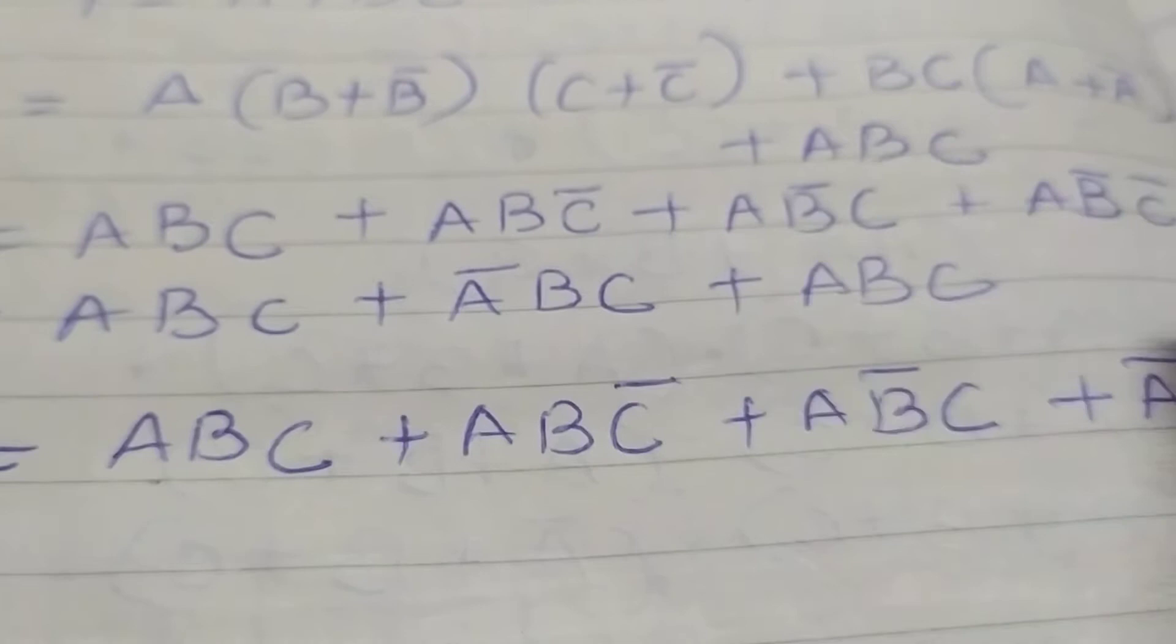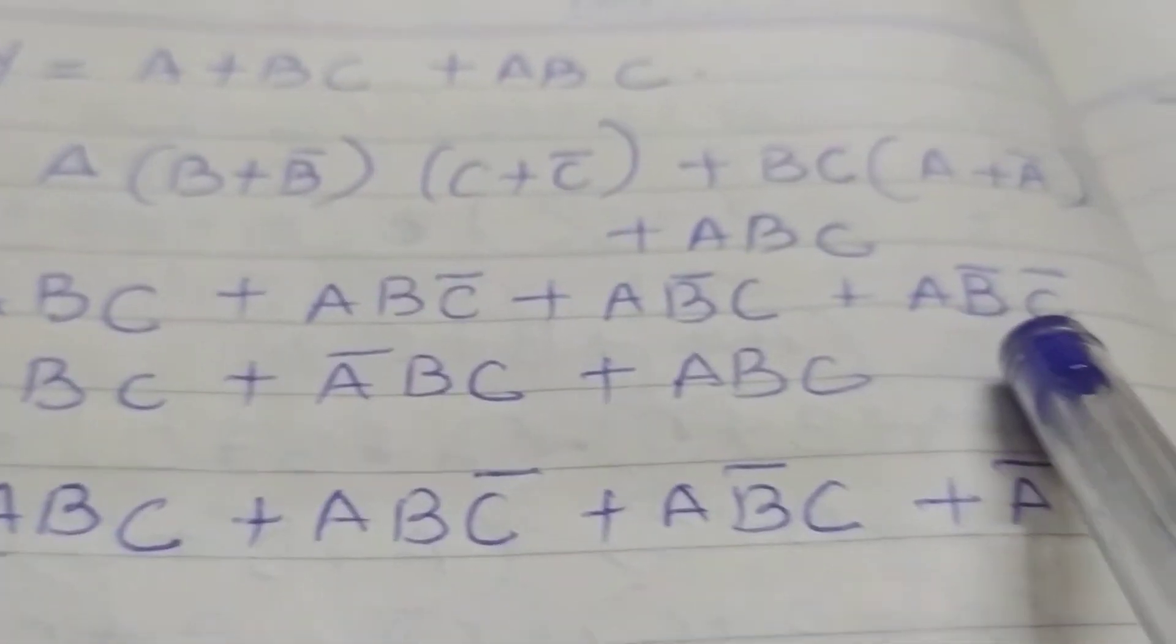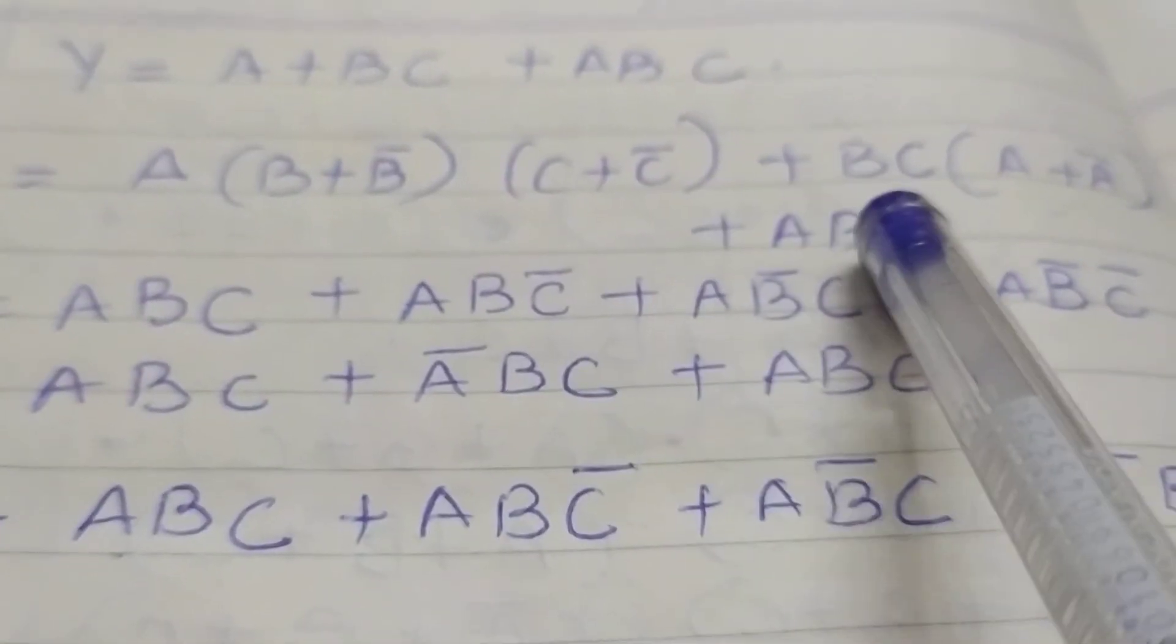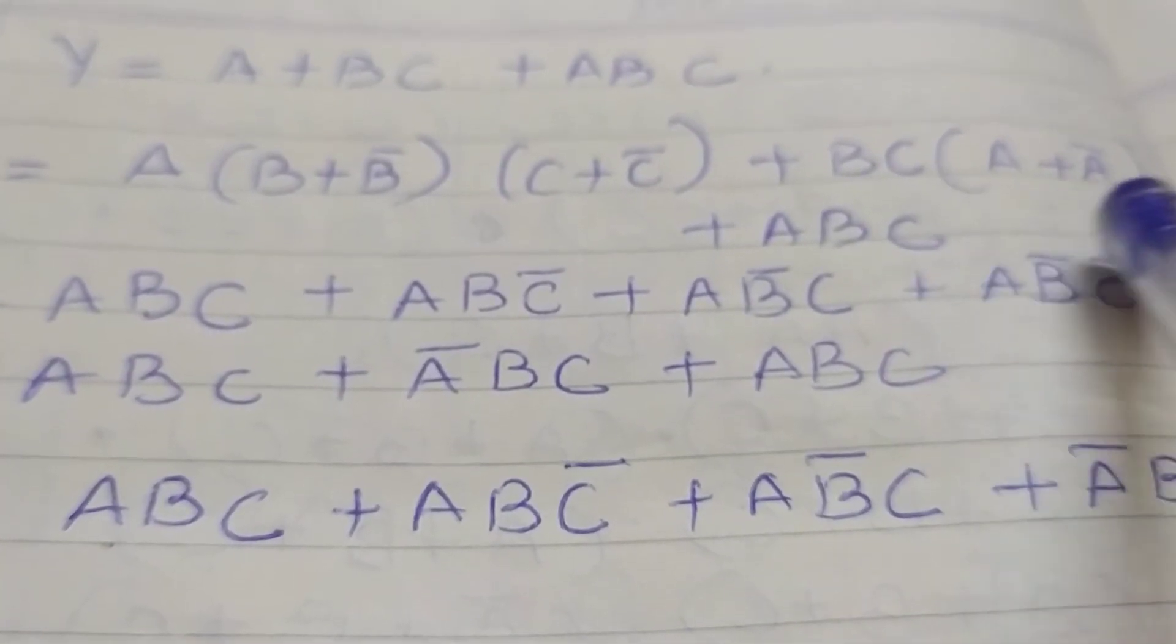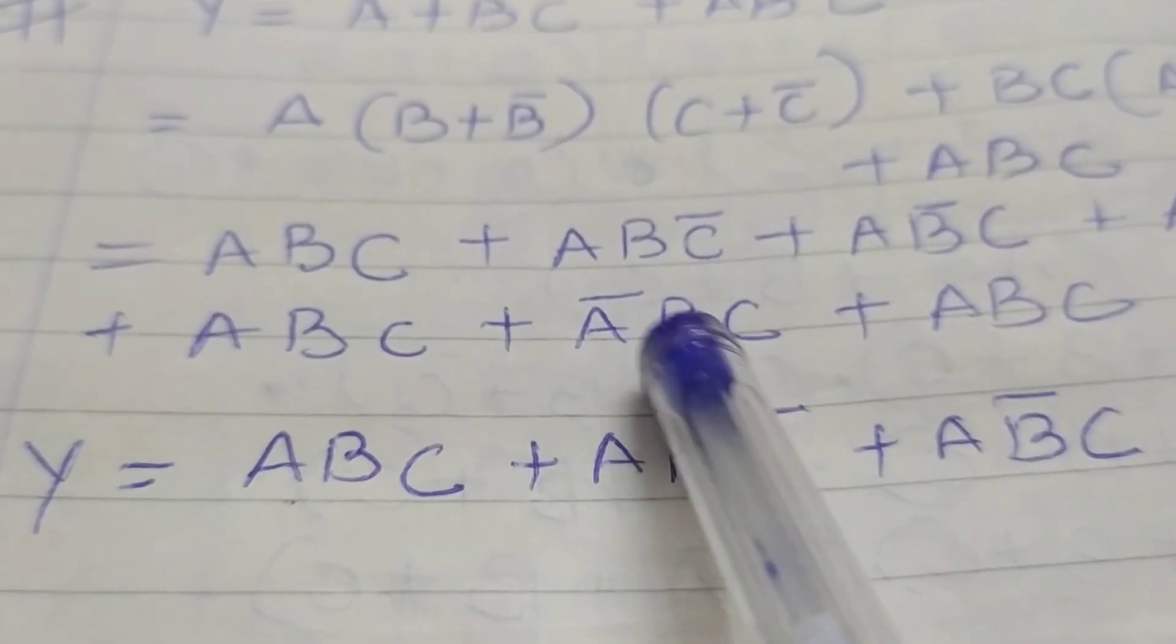You get four terms generated. You have ABC into A plus A bar. This will be ABC plus A bar BC.